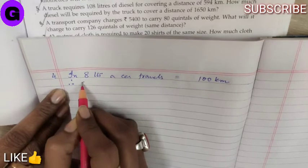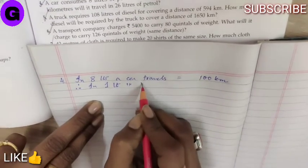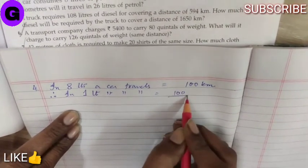Therefore, in 1 litre, a car travels 100 by 8.